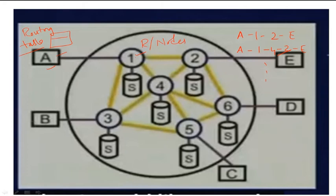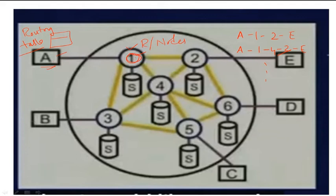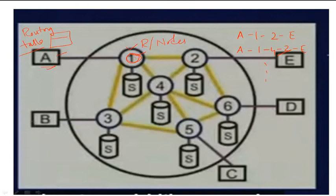We need to select the optimal path — one that delivers data within the least amount of time. To select the optimal path, the routing table at each node may be different. The routing table at host A concerns only node 1, while the routing table at node 1 relates to nodes 2, 4, or 5. This means the routing table may need to change, so routing tables can be static or dynamic.